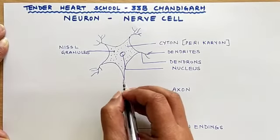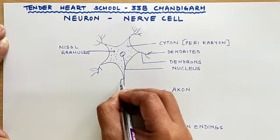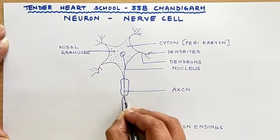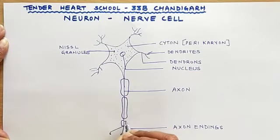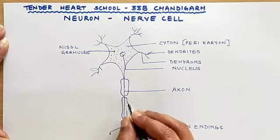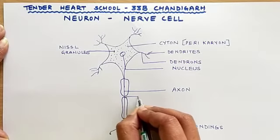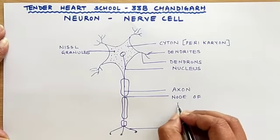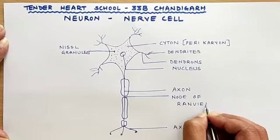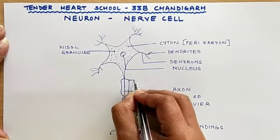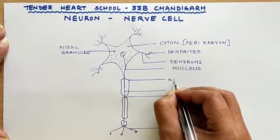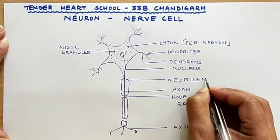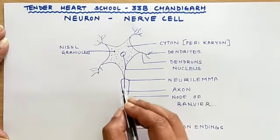Now the axon is covered with a layer called the neurolemma. So neurolemma is present, covering the axon. There are certain periodic gaps between this sheath, and these are called the nodes of Ranvier. This layer which is covering the axon is the neurolemma.